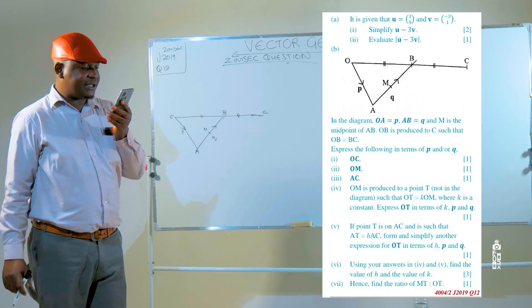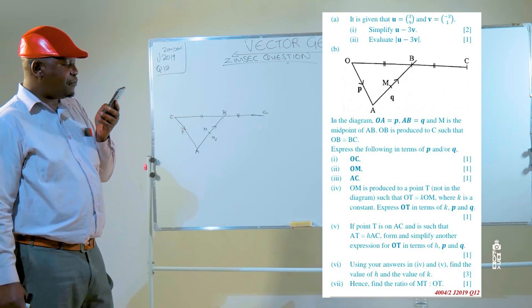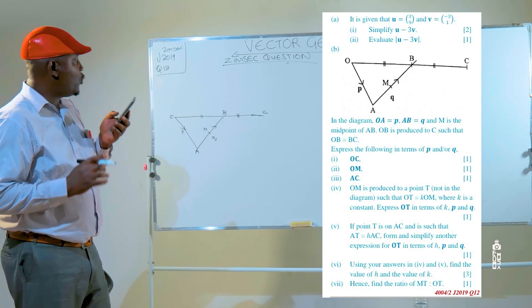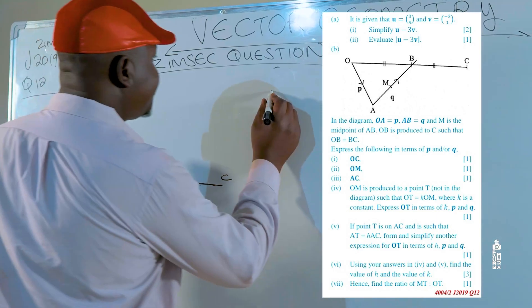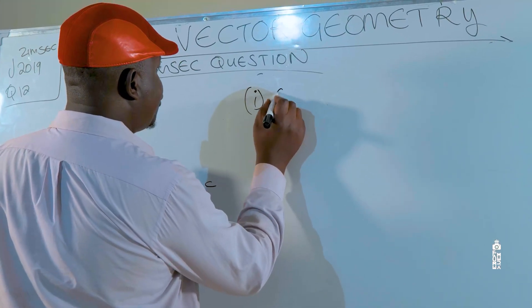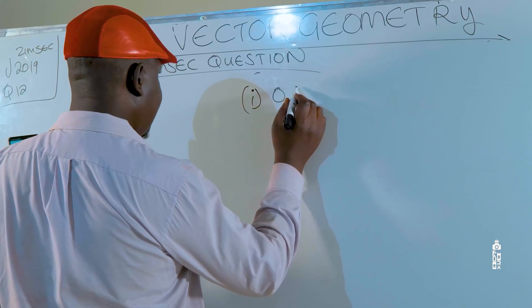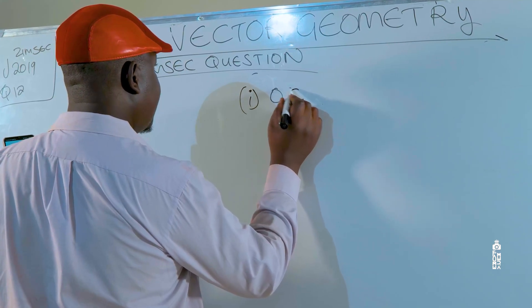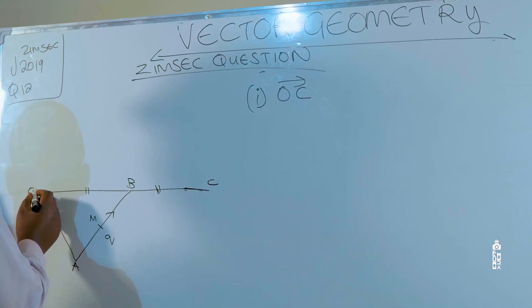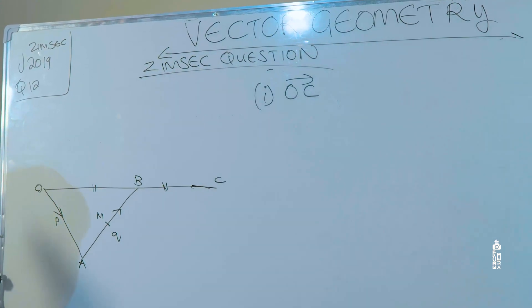Here goes the first question now. Express the following in terms of P and/or Q. Item one: we want to find vector OC.